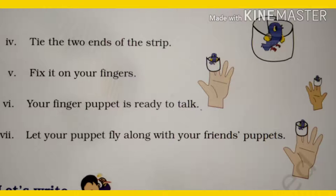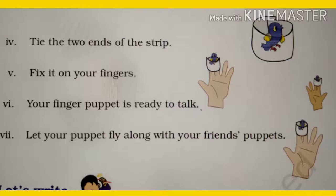Step five: fix it on your fingers. Step six: your finger puppet is ready to talk. Step seven: let your puppet fly along with your friend's puppets.